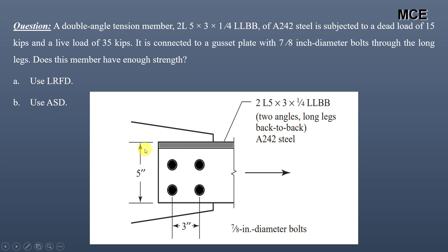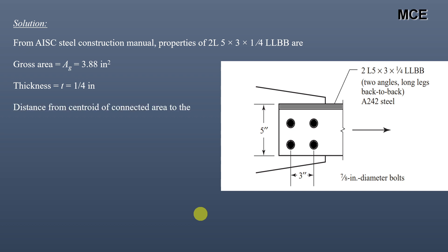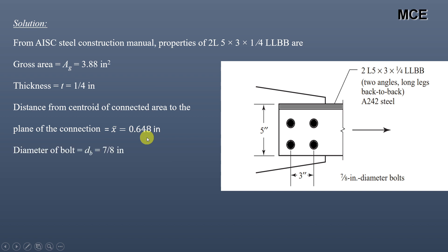You can see the figure for this double angle tension member — it is an L5x3x1/4 with long legs back to back, and the bolt diameters are 7/8 inch. From the steel construction manual, the properties are: gross area = 3.88 in², thickness of angle = 1/4 inch, and x-bar (distance from centroid of connected area to the plane of connection) = 0.648 inch. The bolt hole diameter = 7/8 + 1/8 = 1 inch.